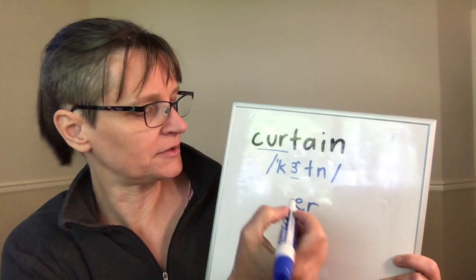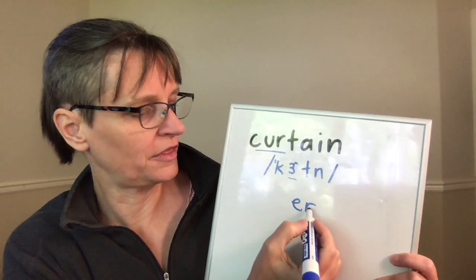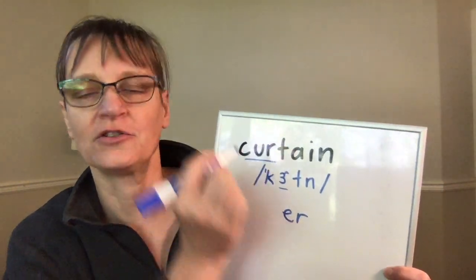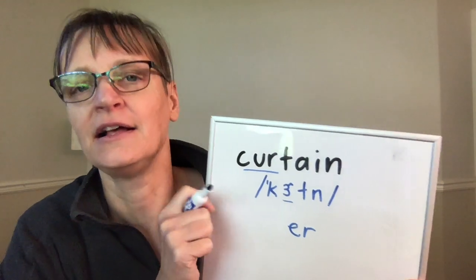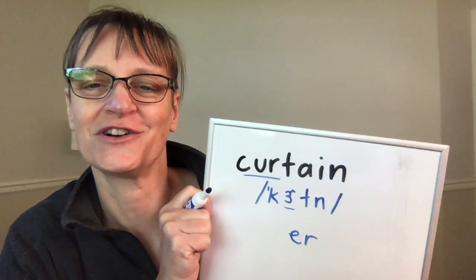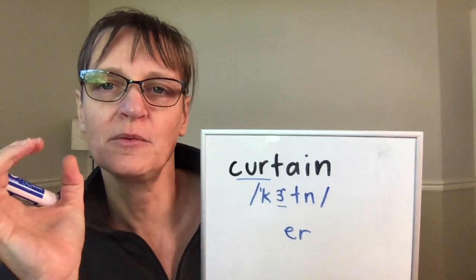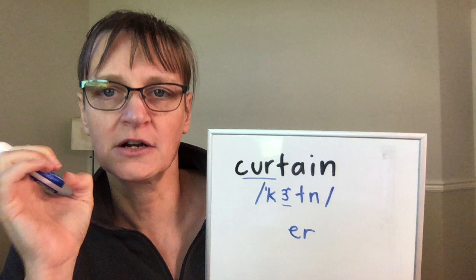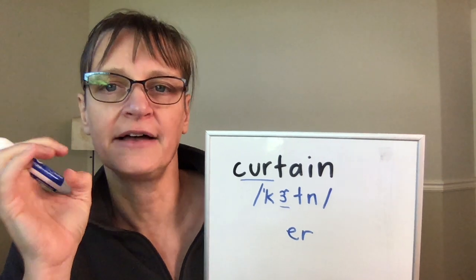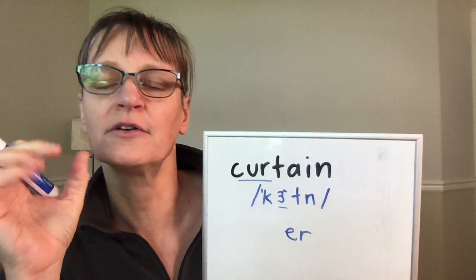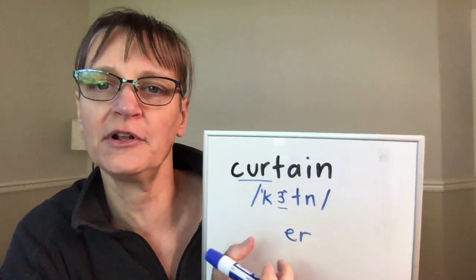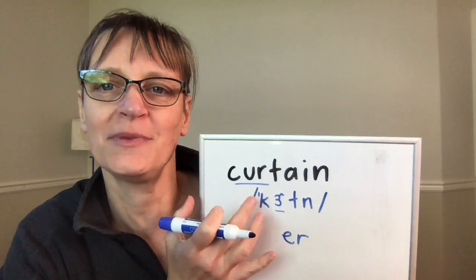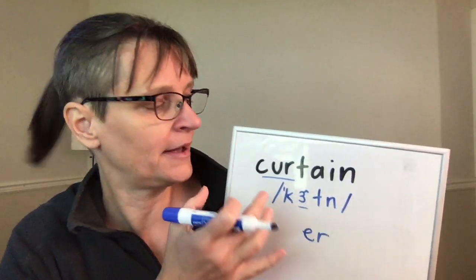You may also see it with the letter R and a vowel shaped like that — different dictionaries use different symbol systems. The important thing to know is that 'curtain' has an ER sound, and so when I build from the ER, that can help me say this difficult word.